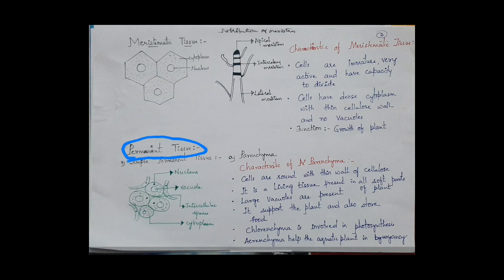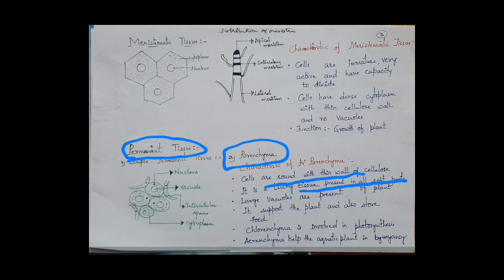The first type is parenchyma. Generally the cells of parenchyma are round with thin walls of cellulose. It is a living tissue because it has protoplasm, and it is present in all soft parts of the plant.